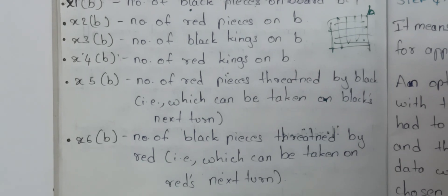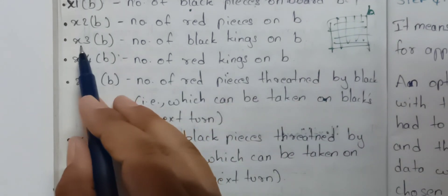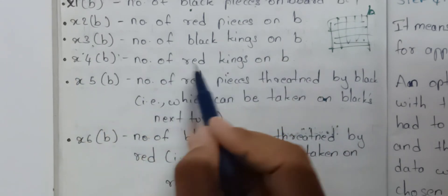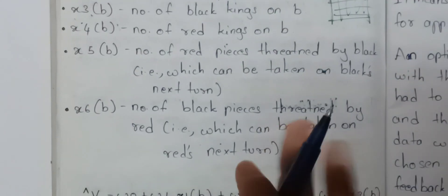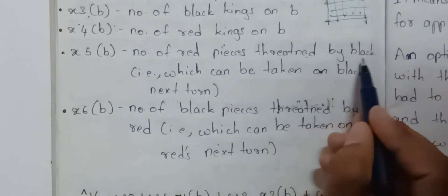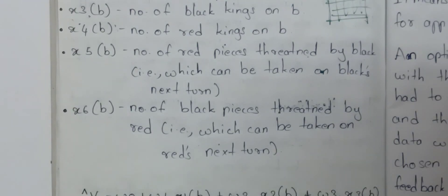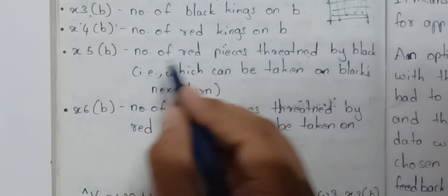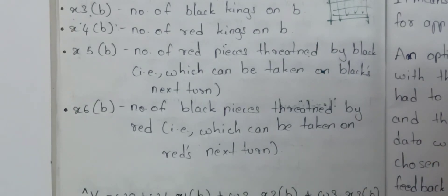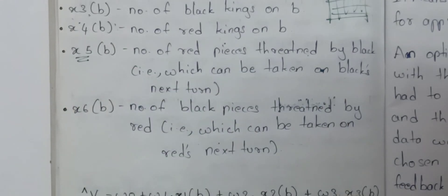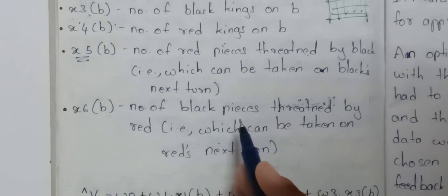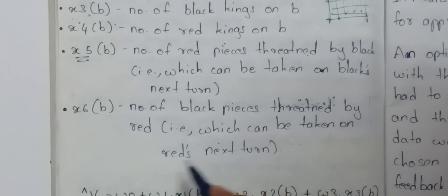X3 is the number of black kings on b, X4 is the number of red kings on b. X5 is the number of red pieces threatened by black — pieces that can be taken on black's next turn. X6 is the number of black pieces threatened by red, which can be taken on red's next move.